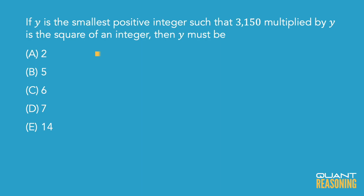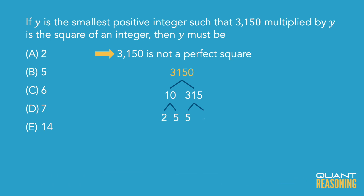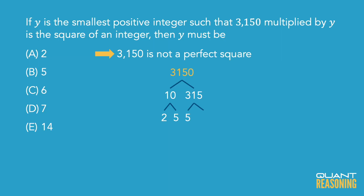Are there any obvious factors for that number? Sure — 10. So that's 10 times 315. The 10 we can break into 2 times 5. And 315 — does that have an obvious factor? Sure, 5. There are 63 fives in 315, so it's 5 times 63.